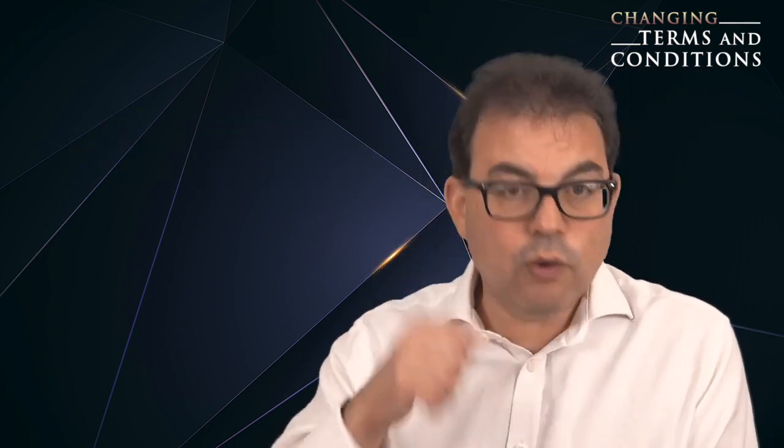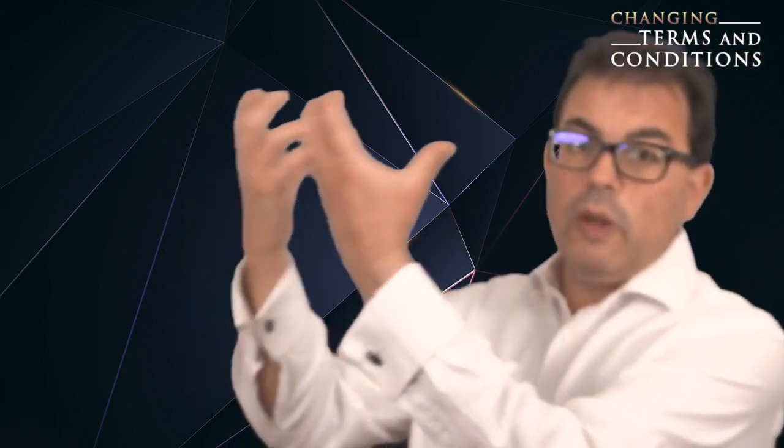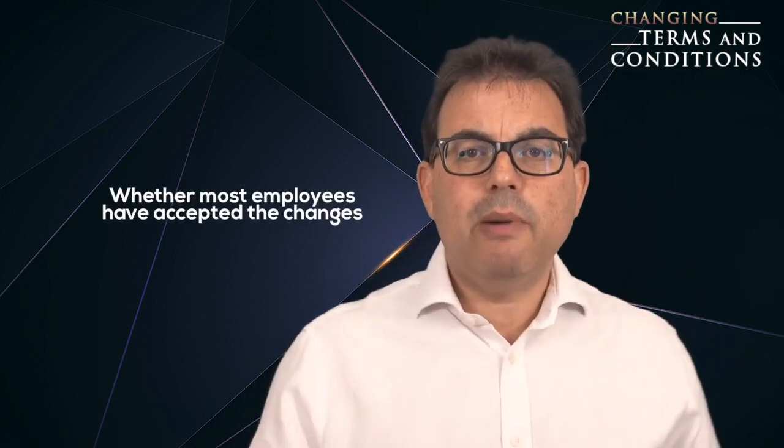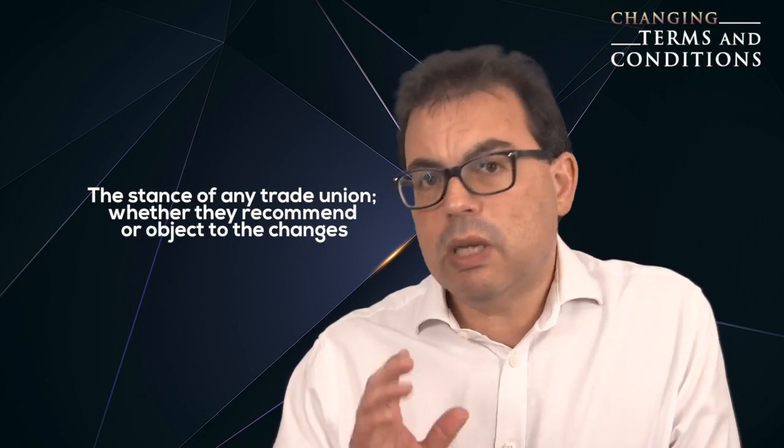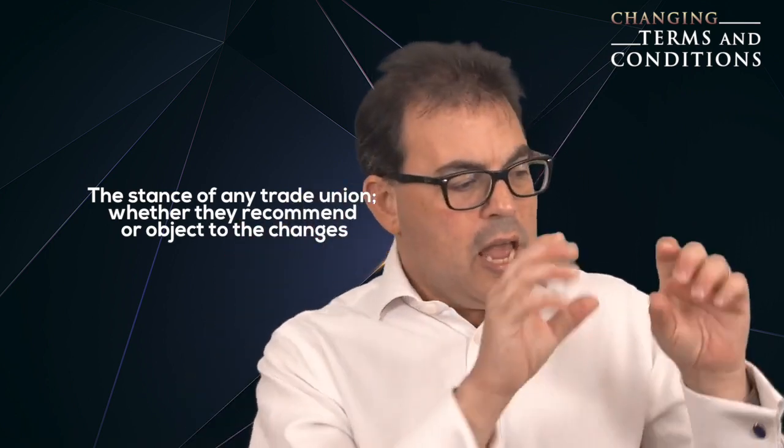An example in a restrictive covenant case might be to adjust the covenants so that employees can take with them any clients who they brought when they came to the job. A really important factor is whether most employees have accepted the changes. If 85% of employees have accepted the changes, it's more likely to be accepted as reasonable by a tribunal. Then there's the stance of a trade union, whether the union recommends or objects to the change. If the union supports the change as part of a package of negotiated changes and you've just got a few standout employees who are refusing to sign, you've got a pretty good chance of persuading a tribunal that a dismissal for refusing to agree to new terms and conditions is reasonable.